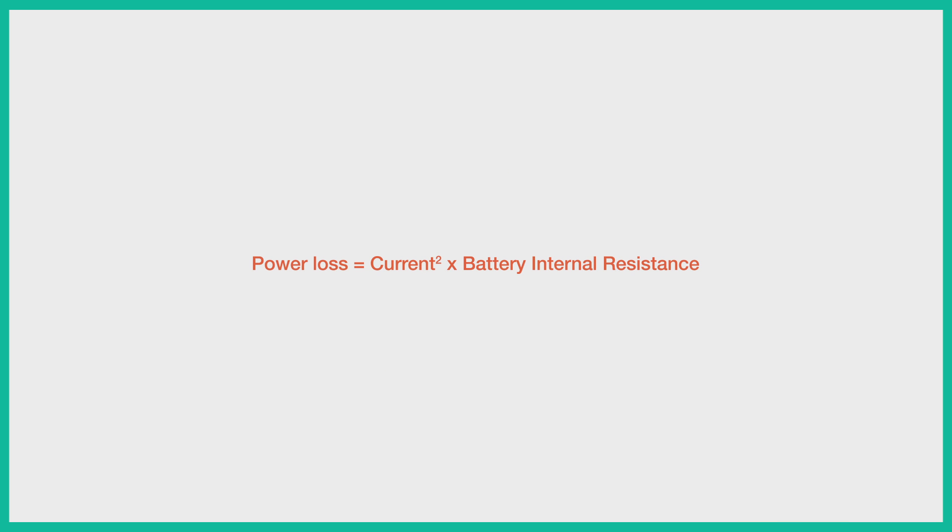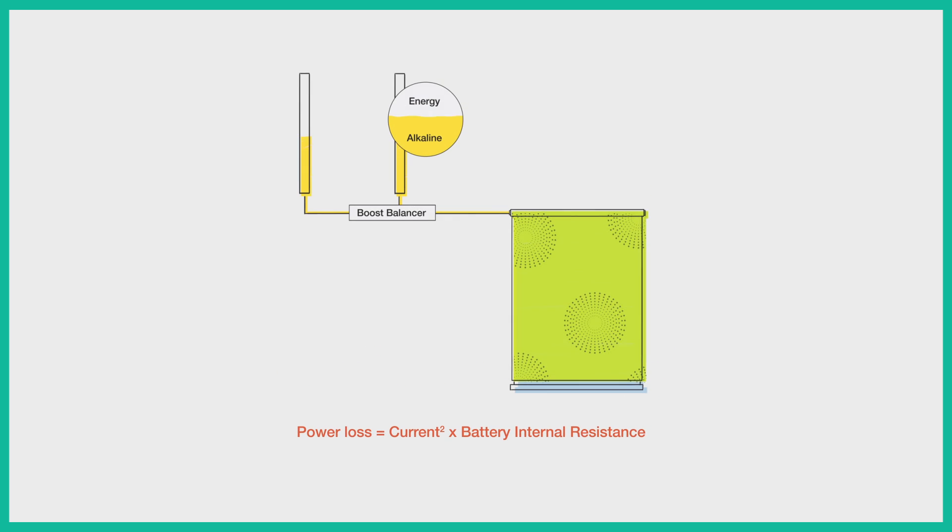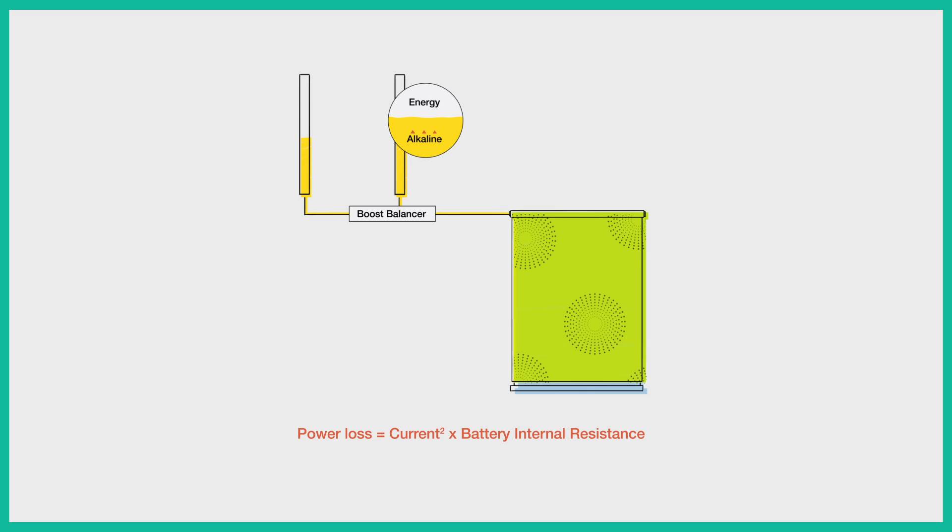Power loss in a battery is the current squared times the internal resistance of the battery. With the new battery boost system, each battery pack only needs to supply half of the total current. Because the current is squared, each battery pack is only operating at a quarter of the original power loss. With two packs, the result is half of the power loss compared to any system without a boost balancer.